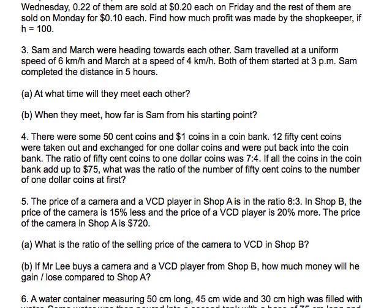So basically it says Sam and Marge were heading towards each other. Sam travelled at a uniform speed, in other words the same speed all the time, of 6 km per hour, and Marge at a speed of 4 km per hour. Now both of them started at 3pm. Sam completed the distance in 5 hours. At what time will they meet each other?